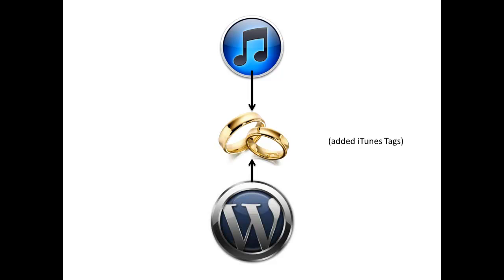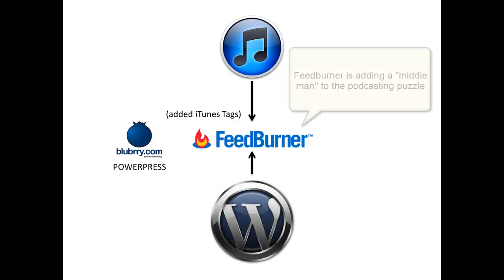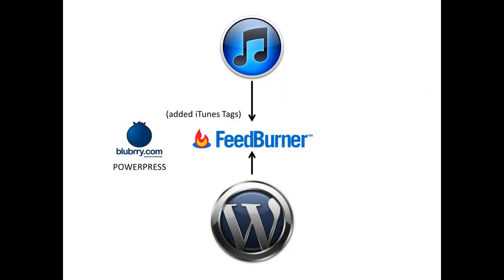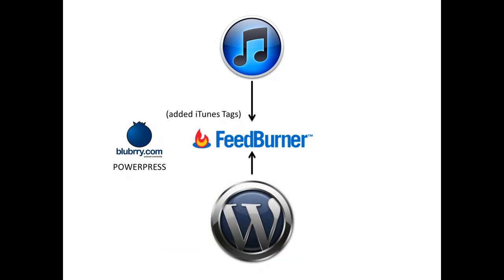Let me show you how that works and why I recommend a couple of different services. One is FeedBurner — very easy to update, I'll show you this in a second. The second one is the Blueberry PowerPress plugin for WordPress. This is my favorite way. FeedBurner is a third-party — you have WordPress and you have FeedBurner. When you use the Blueberry PowerPress plugin, it is an extension of WordPress. When you update WordPress, the PowerPress plugin is instantly updated.